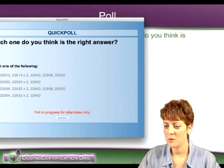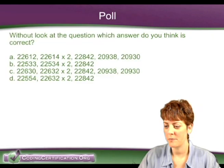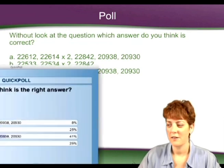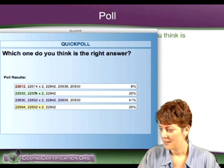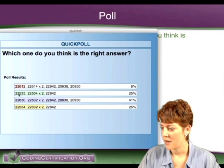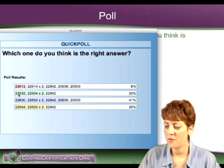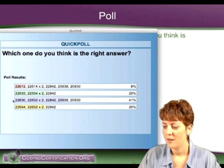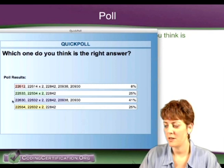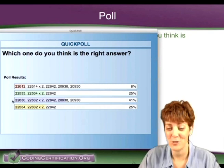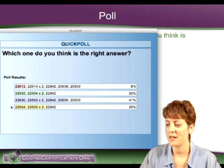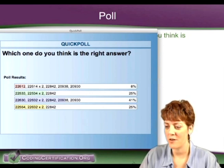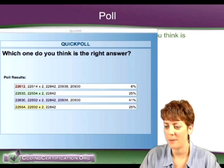All right, I'm going to close the poll and see what we got. So we got 8% thought it was Answer A, 25% thought it was Answer B, 41% thought it was Answer C — very interesting — and 25% answered D. Very interesting. So let's take a look at that.